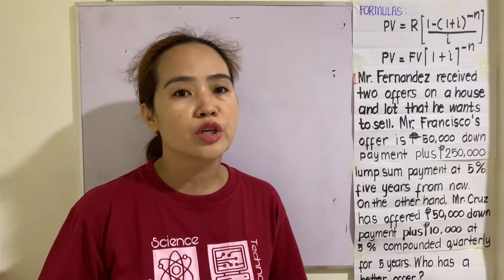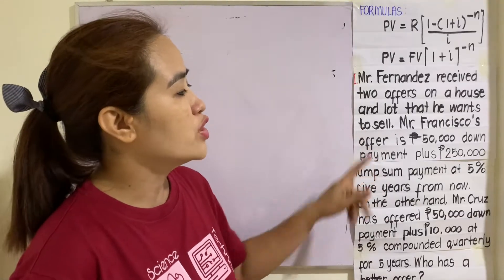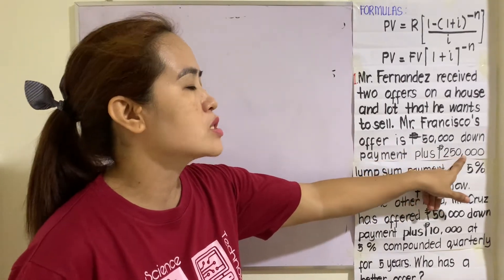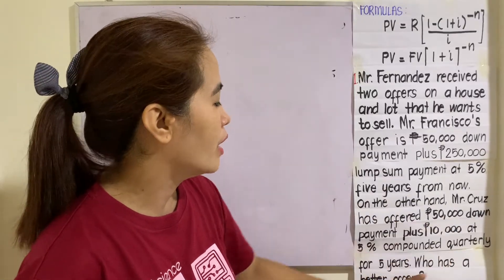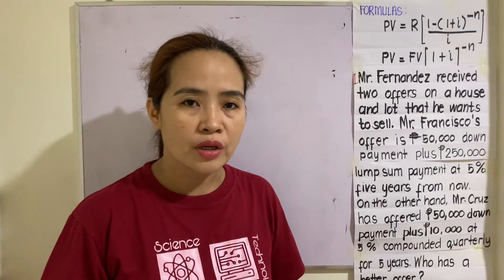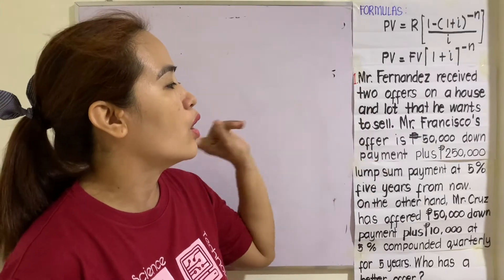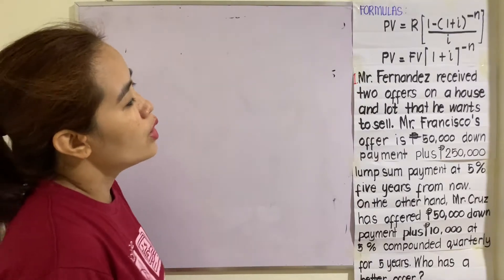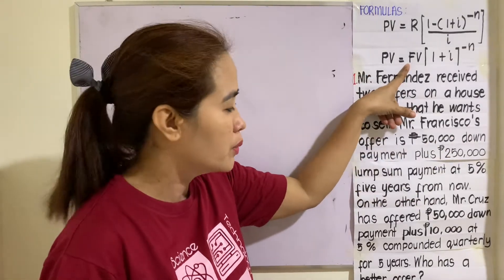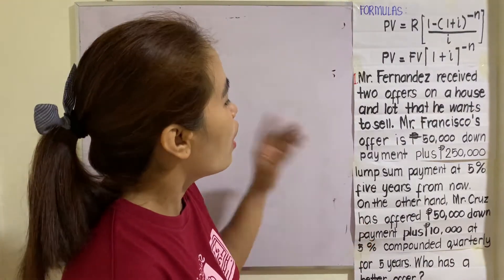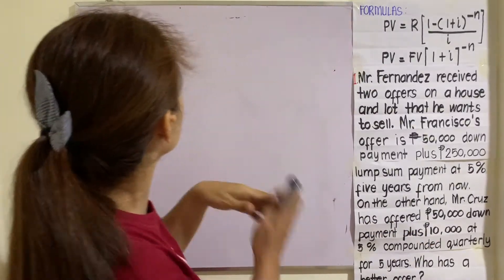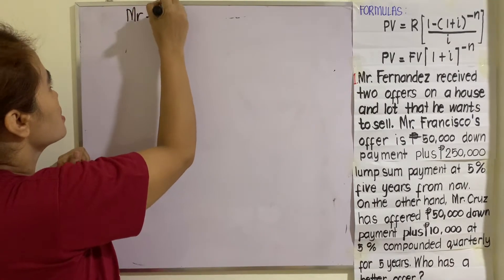When we talk about fair market value, we are looking for the present value of the lot. We have two offers: 50,000 down payment plus 250,000 lump sum, and 50,000 down payment plus 10,000 quarterly. For Mr. Francisco's offer, we will use the second formula since 250,000 is the future value. For Mr. Cruz's offer, we will use the first formula since the periodic payment is 10,000.